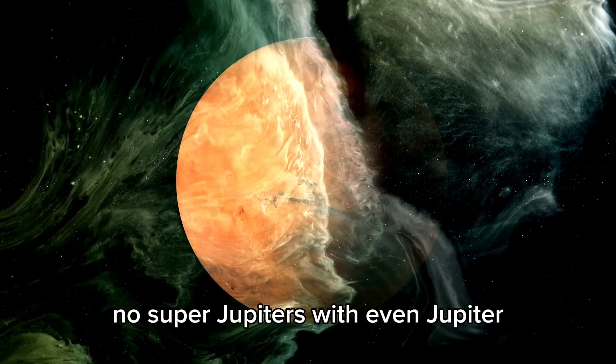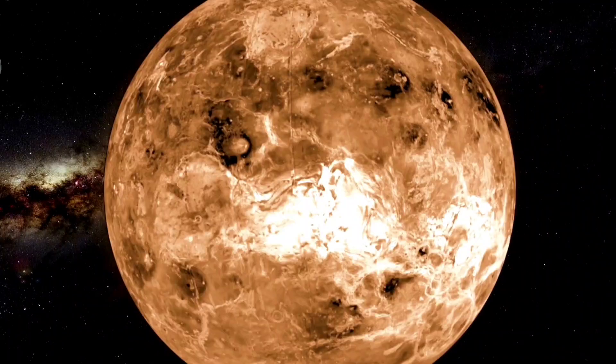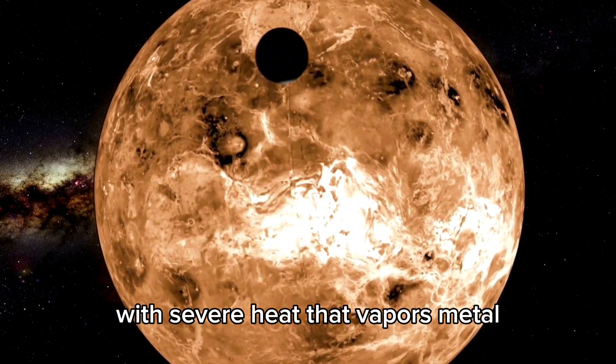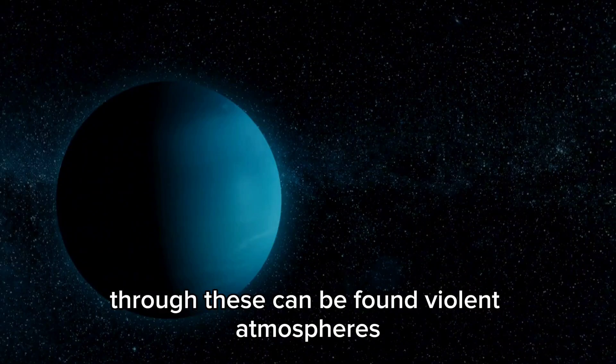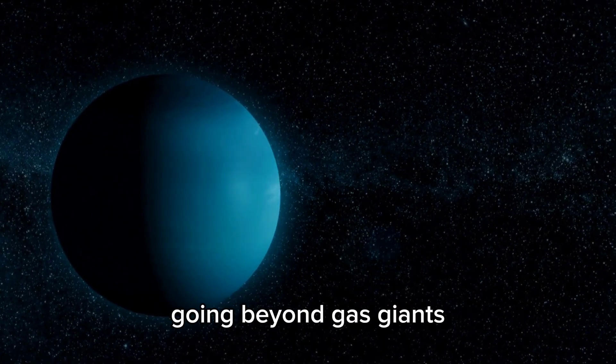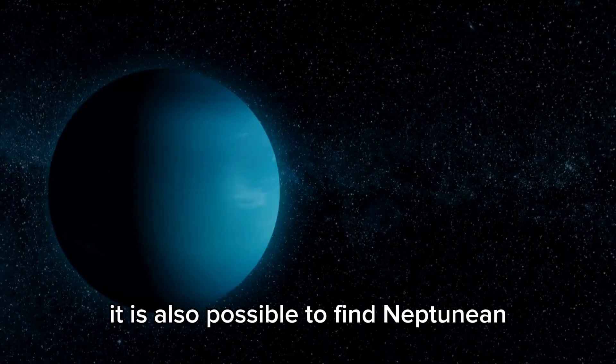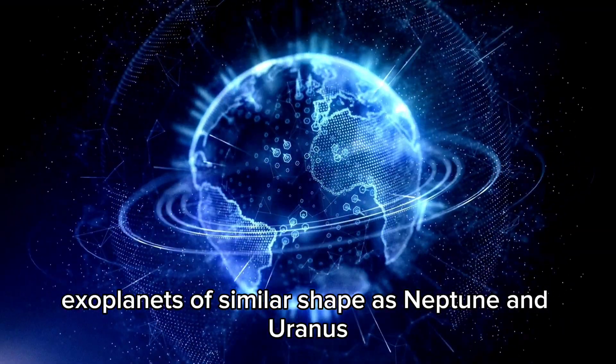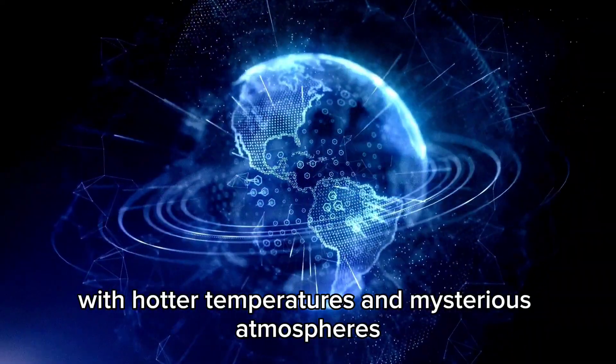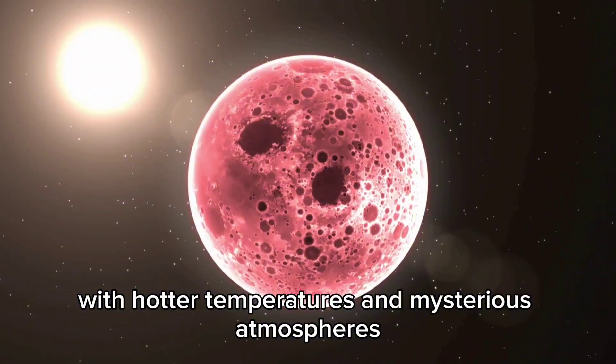Known as super-Jupiters, with even Jupiter seeming rather modest. Also found near the stars are hot Jupiters, with severe heat that vaporizes metal. Through these can be found violent atmospheres. Going beyond gas giants, it is also possible to find Neptunian exoplanets of similar shape as Neptune and Uranus. These include hot Neptunes and mini-Neptunes, with hotter temperatures and mysterious atmospheres.